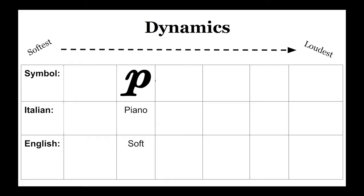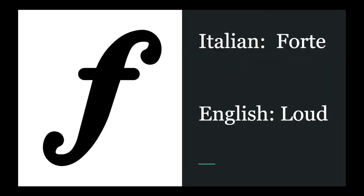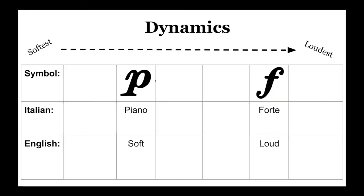However, it is not our softest dynamic marking. Next, we have the letter F, which symbolizes the Italian word forte. In English, forte means loud. Back on our dynamics chart, you can see that forte is placed on the louder side of the scale, while piano is towards the softer side. All of the other dynamic markings we are going to learn are built off of these two symbols, piano and forte.